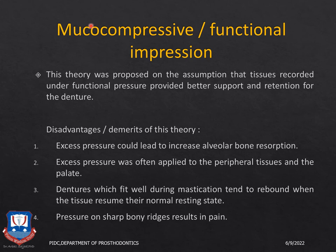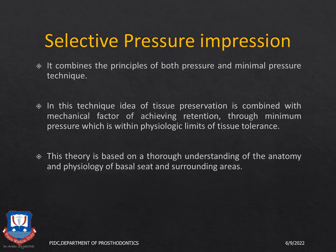The mucocompressive impression theory was the complete opposite, advocating that pressure should be applied during impression making over the entire denture basal seat area. However, excessive pressure interrupts blood circulation, leads to alveolar bone resorption, causes soreness over bony spicules and undercuts, and because tissues rebound after being recorded under pressure, the denture lifts away from the basal seat area, resulting in loss of retention.